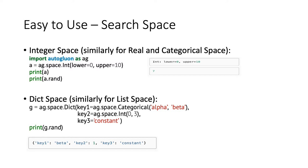Now let's look at the easy-to-use API to construct search spaces. In the top example, we show how to construct an integer space. We first import AutoGluon, then construct a variable using an integer space between 0 and 10. We can call rand to get a random value — it returns 7 in this example. Similarly, we can have real space and categorical space. Categorical space is a set of different choices. For the bottom example, we use a dictionary space to show a nested search space. We create a variable from a dictionary space with three keys and values. The values of different keys can be given by other search spaces, such as categorical or integer space, or we can also use a constant value. When we call the rand function, we get a random example from this dictionary space.